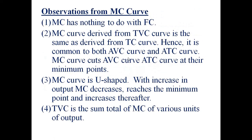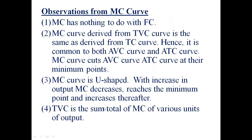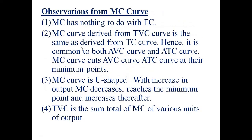The MC curve is U-shaped, and we have already discussed why — because of increasing returns, decreasing returns, and the law of variable proportions. TVC is the sum total of MC of various units of output. So TVC equals the sum of MC.